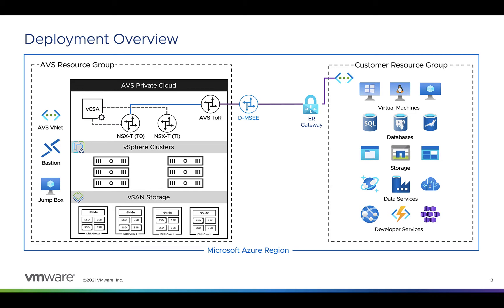Here you can see that we have our vSphere clusters all configured with vSAN storage, managed by vCenter, all using NSX-T for network connectivity. NSX-T traffic is routed to the AVS underlay and then to a dedicated Microsoft Enterprise Edge, from which it can then be connected to existing Azure VNets by way of an ExpressRoute gateway, or connected to on-premises resources via configuring ExpressRoute Global Reach, connecting to a customer-provided ExpressRoute.